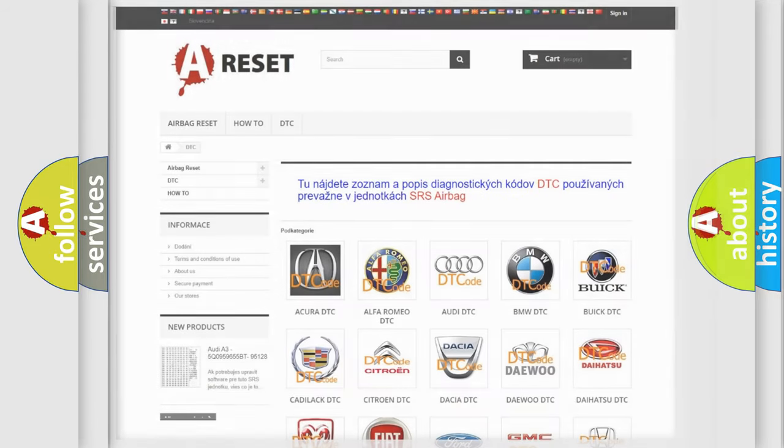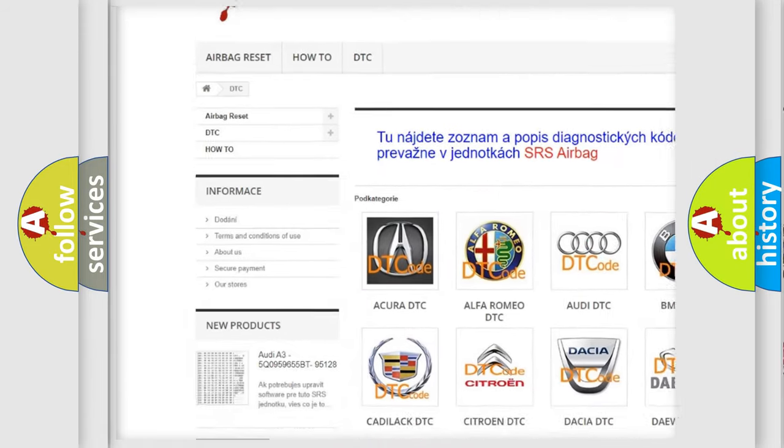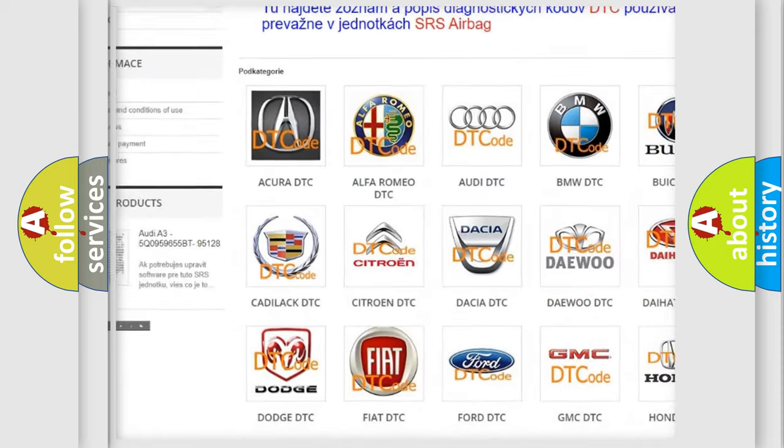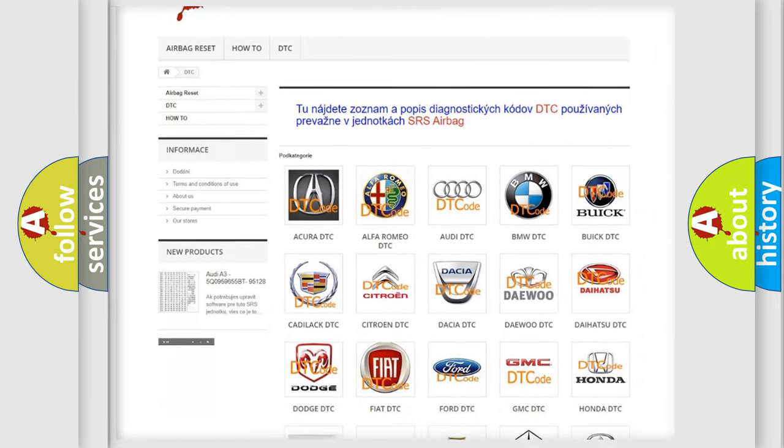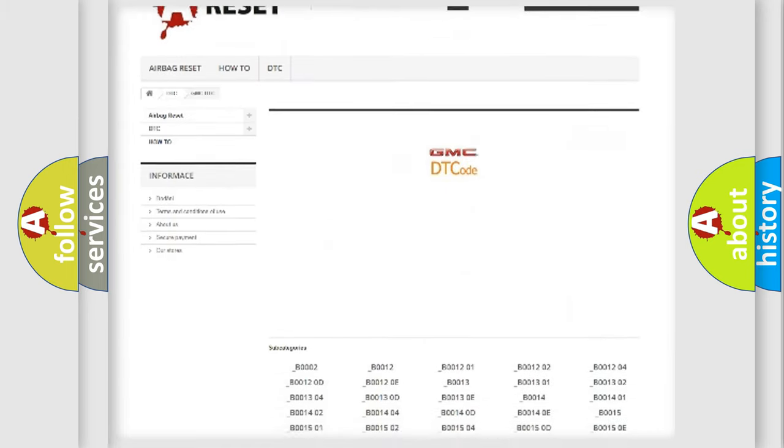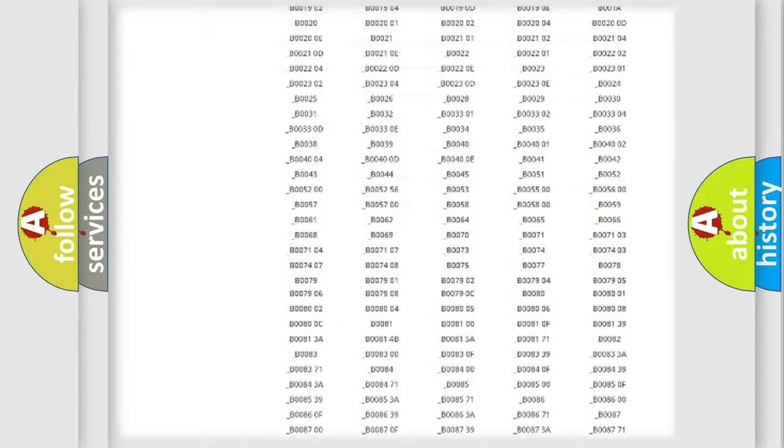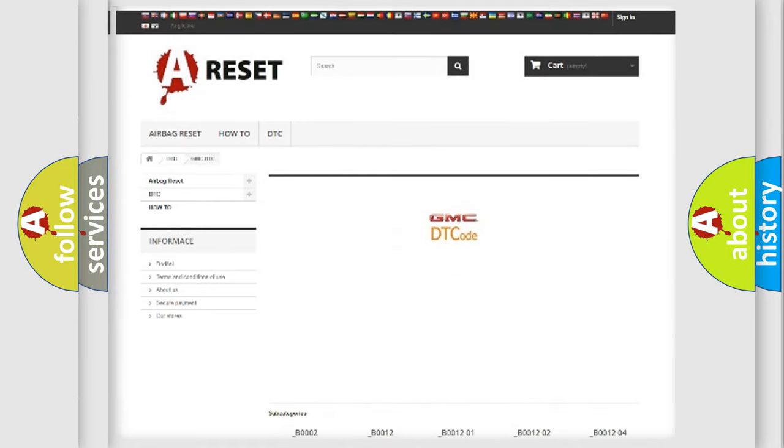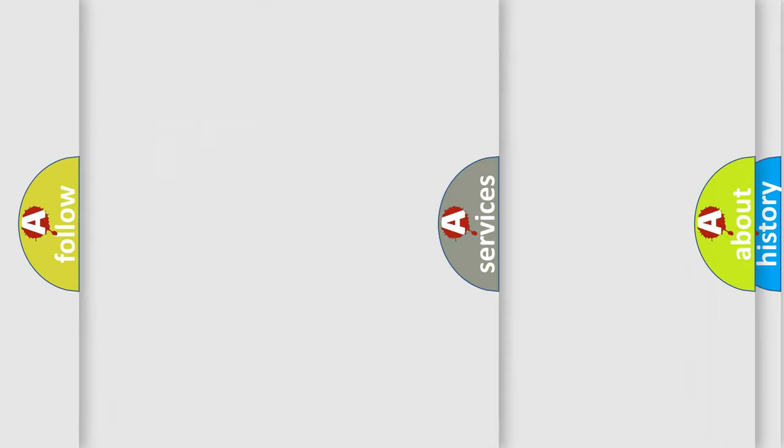Our website airbagreset.sk produces useful videos for you. You do not have to go through the OBD2 protocol anymore to know how to troubleshoot any car breakdown. You will find all the diagnostic codes that can be diagnosed in GMC vehicles, and also many other useful things.